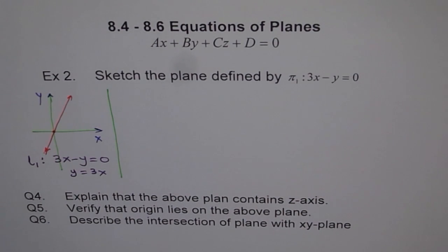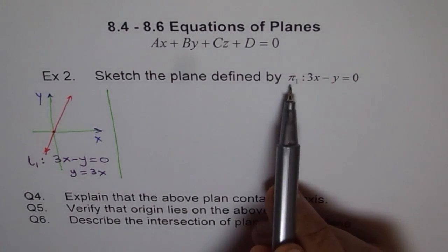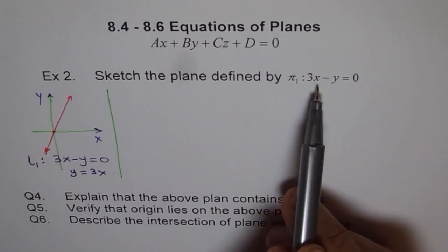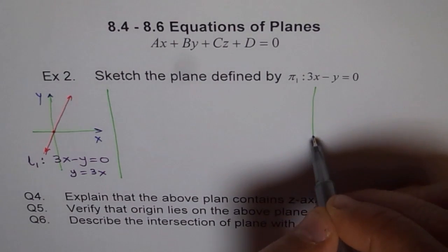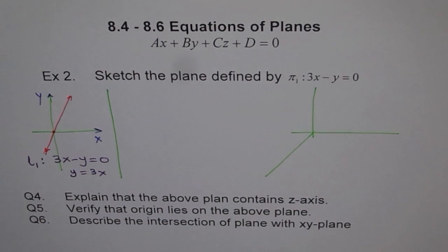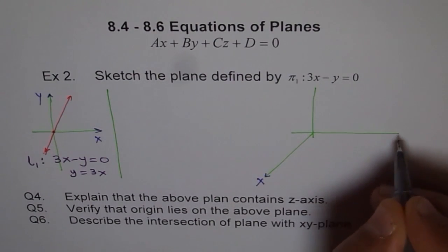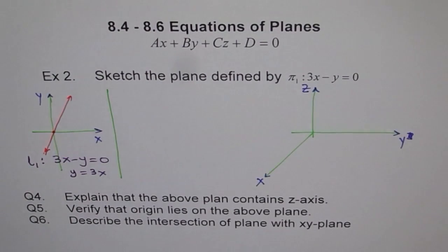Now we are trying to look at a plane which is 3x minus y equals 0. As a reminder, don't just look at the equation — it may be confusing. The label π tells you there is a plane, not a line. That is a very important part of our equation. So let's try to sketch this. That's our three-dimensional axis: x, y, and z.